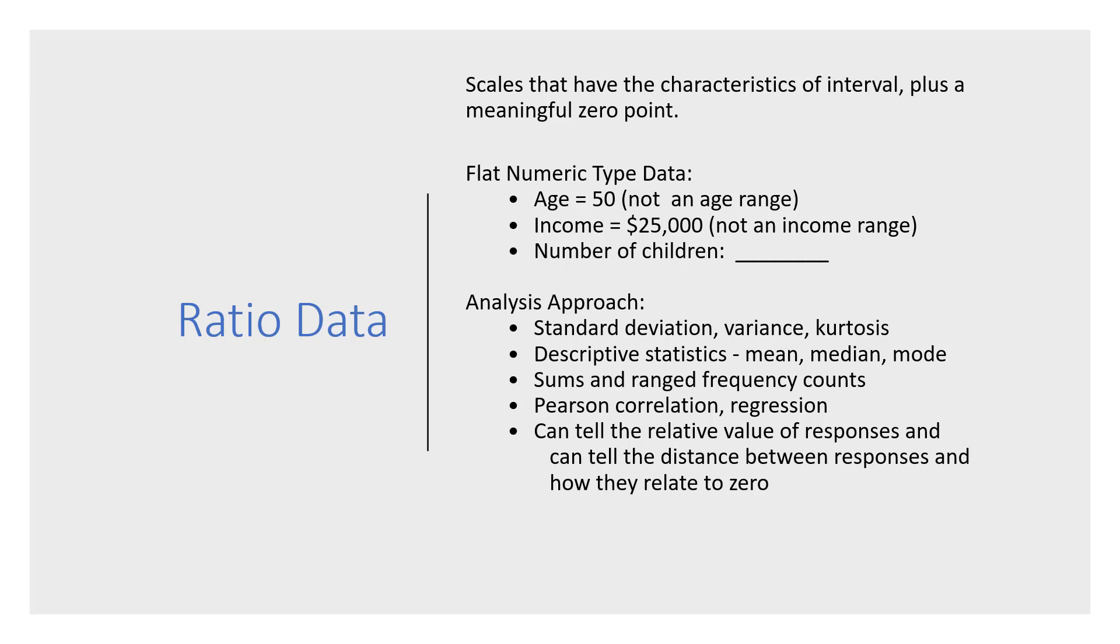Ratio data are really the most sophisticated type of data. It has all the characteristics of interval plus a meaningful zero point. What do we mean by meaningful zero point? Remember the interval data: 1, 2, 3, 4, 5. There's no meaningful zero in the sense that as long as we capture the interval of one, it should be fine. We can do, for example, -2, -1, 0, 1, 2. They have similar application as 1, 2, 3, 4, 5. You don't have to have a specific fixed zero point.